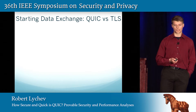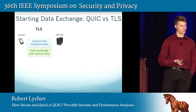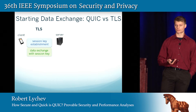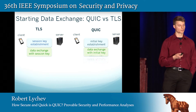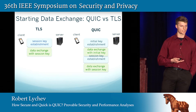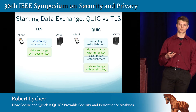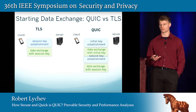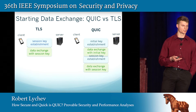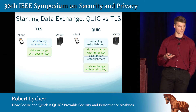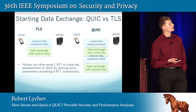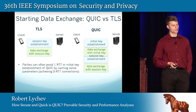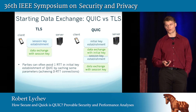Let me now talk about data exchange in QUIC versus TLS. In TLS, in order to exchange data, you first have to establish a session key, and then you can use that key to encrypt the data you're trying to exchange. In QUIC, things are slightly different — it actually looks like it has more stages, but in reality you can start exchanging data before you establish the final session key. This data exchange happens with the initial key, and at the same time as you exchange data with the initial key, you can also establish the final session key. The main benefit is that parties can often avoid one RTT in the initial key establishment of QUIC by caching some of the protocol-specific parameters.